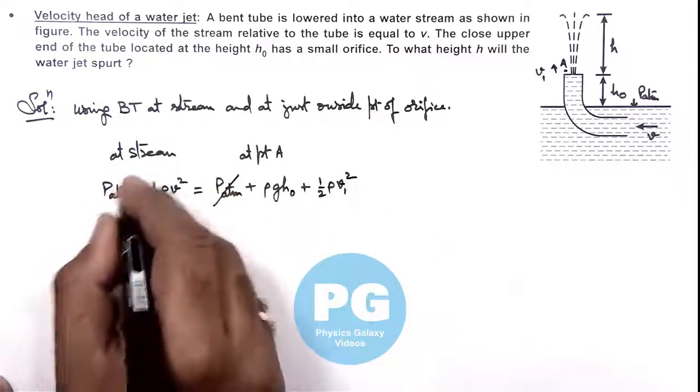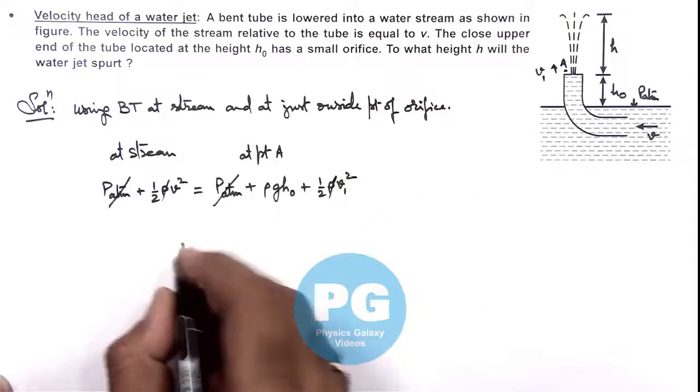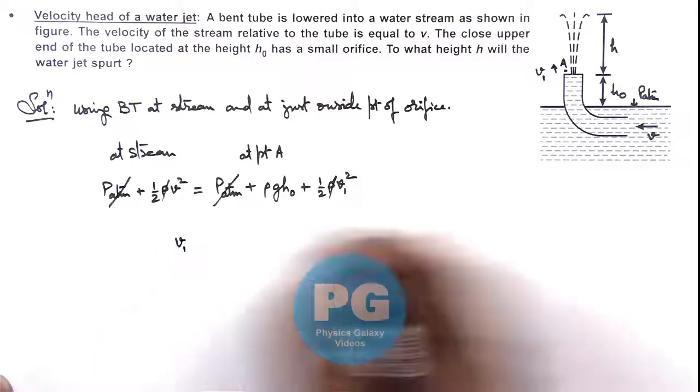Here P_atmospheric gets cancelled out, rho also gets cancelled out, and the velocity of water jet just after ejection of orifice we are getting is v_1 which is